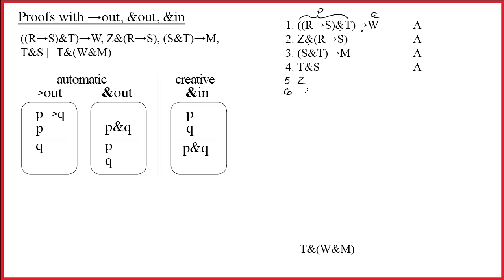Put Z on one line, R arrow S on another line. Justification for both of these is just to cite the line number, which is two, ampersand out. And we'll use the ditto marks. Did it twice. I'm going to check this one off because I've worked on its main connective.